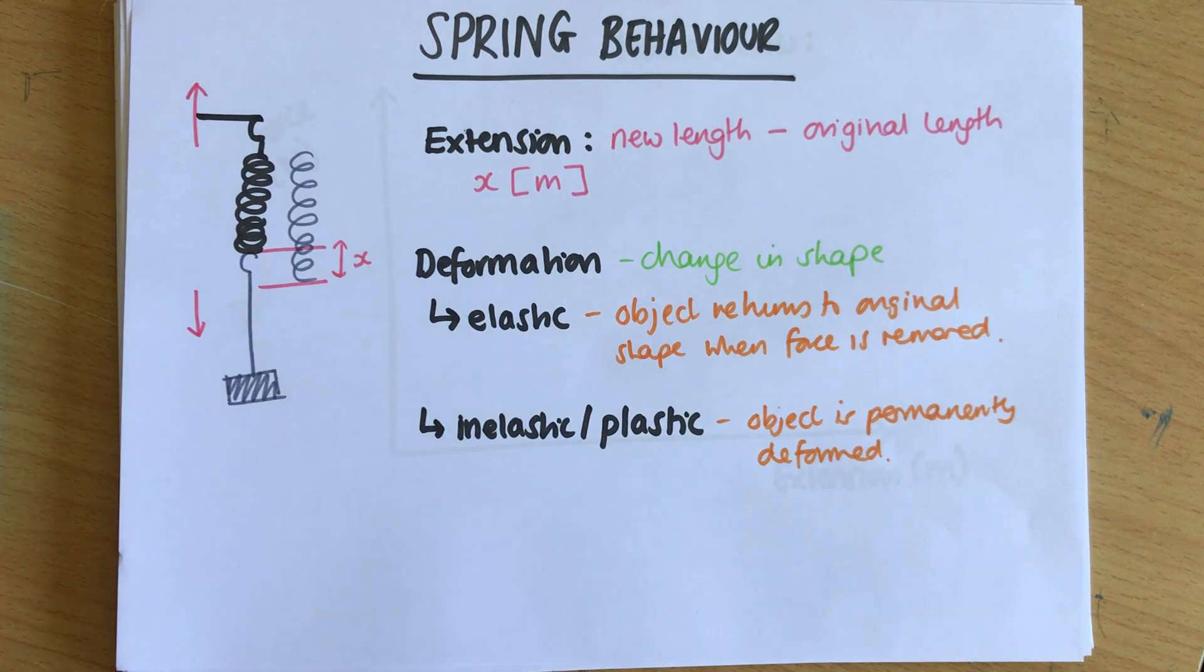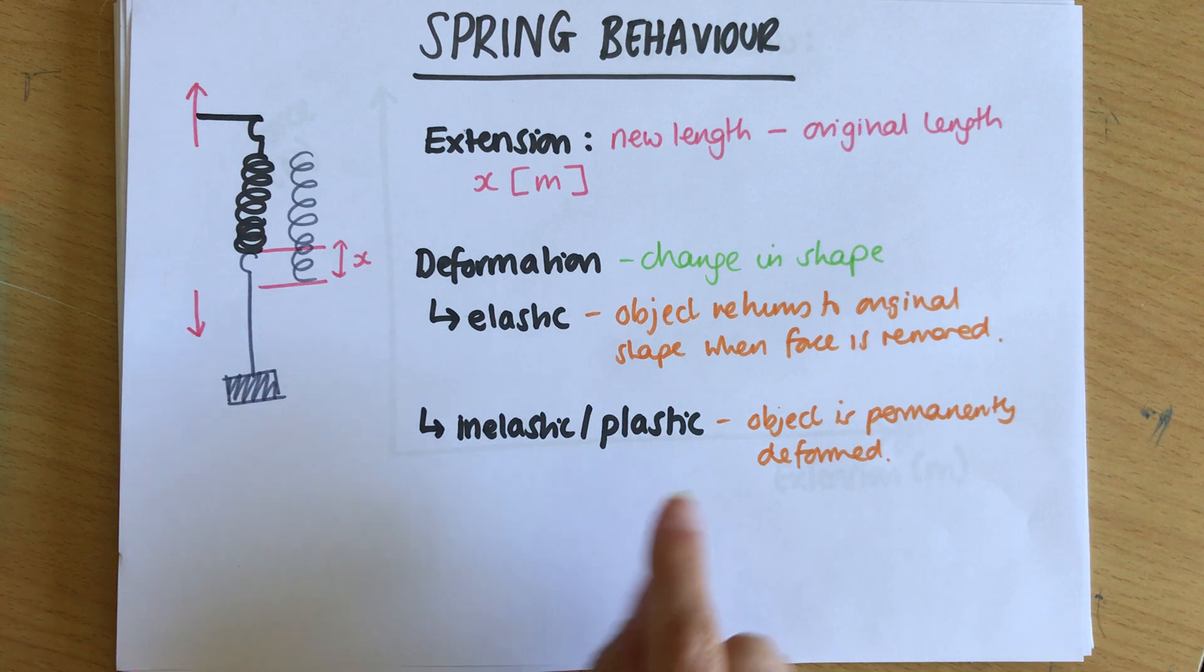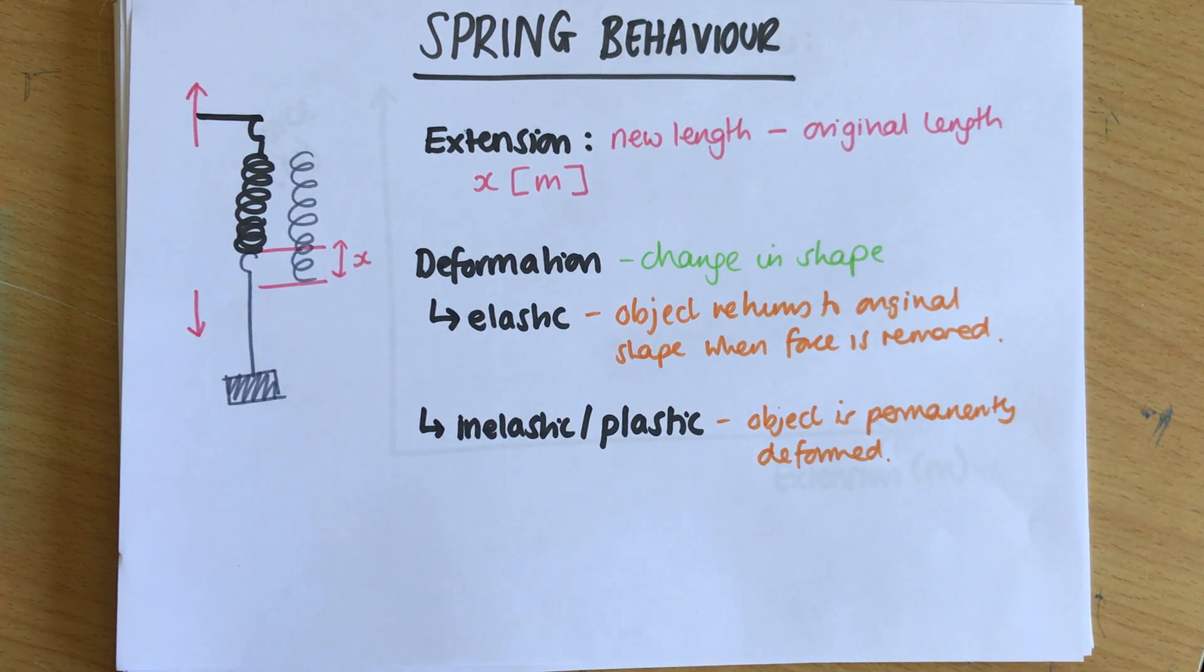When you deform it, it doesn't go back to how it's meant to be, and it has the word plastic because when we made plastic material it had this property of being able to be deformed and molded and then staying there. That's why it's called plastic because it shows plastic behavior.